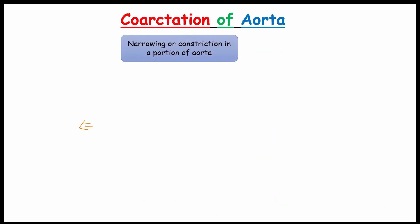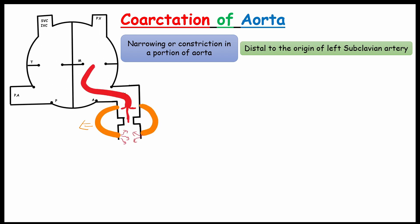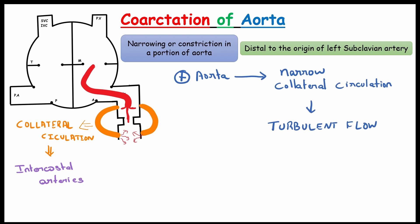Let's see coarctation of aorta. It means narrowing or constriction of a portion of aorta. Most common site of coarctation of aorta is distal to the origin of left subclavian artery. Due to the narrowing of the aorta, blood obviously go through the collateral circulation as a compensation method. In here, the collateral arteries will be intercostal arteries. High pressure of blood in aorta which passes the narrow collateral vessels which leads to turbulent flow. Blood will continuously move from the proximal to distal part of aorta causes continuous murmur.